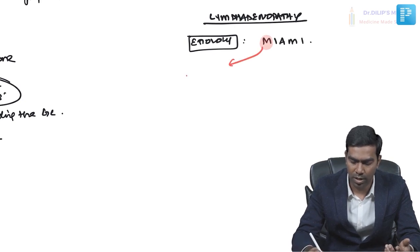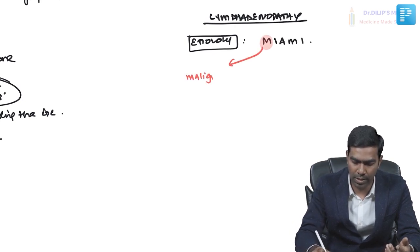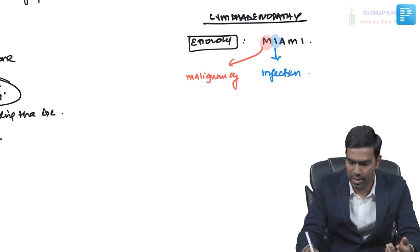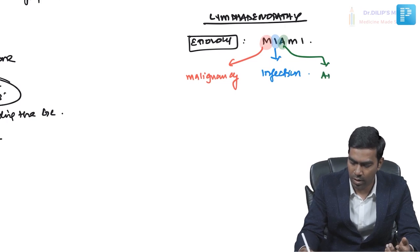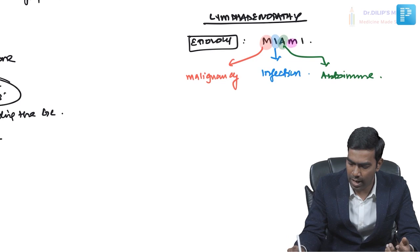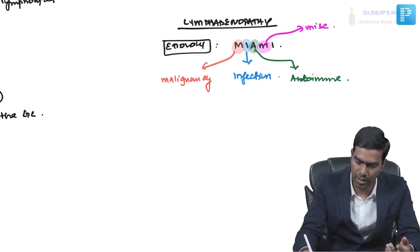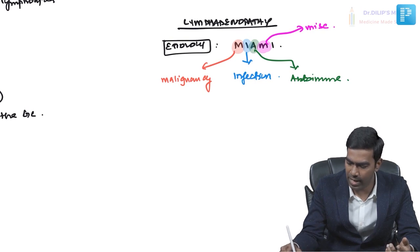So M stands for Malignancy, I stands for Infection, A stands for Autoimmune, the next M stands for Miscellaneous, and the final I stands for Iatrogenic. Let us see some of the important causes under each category.